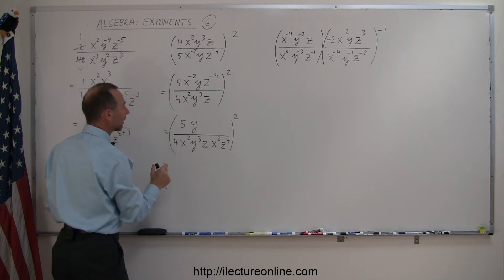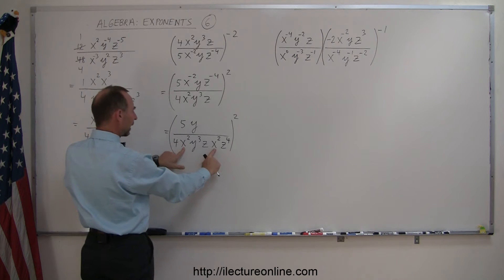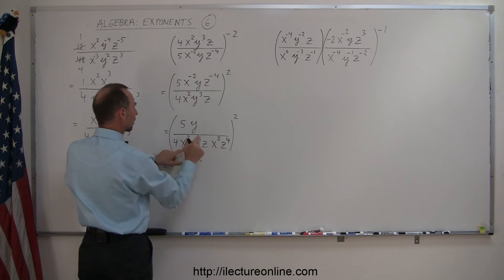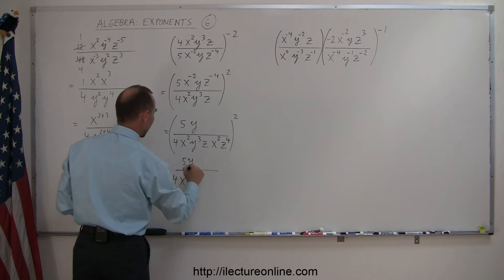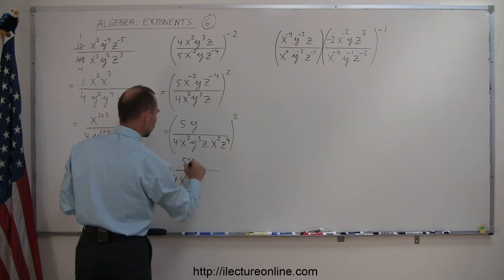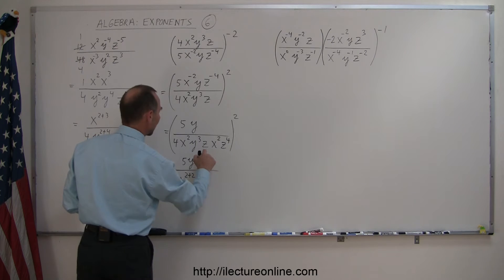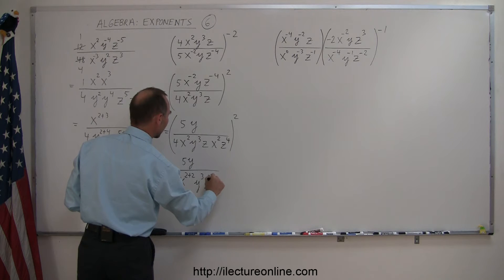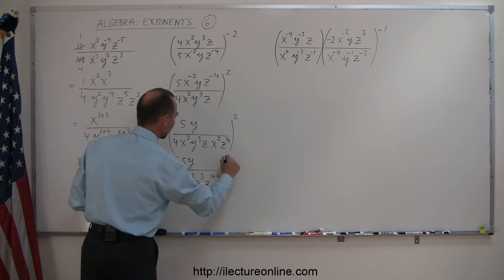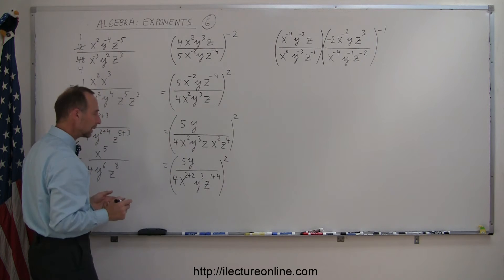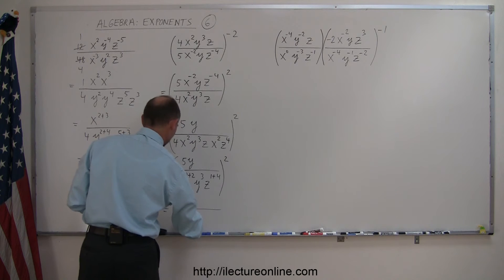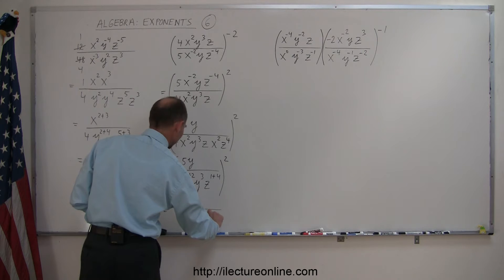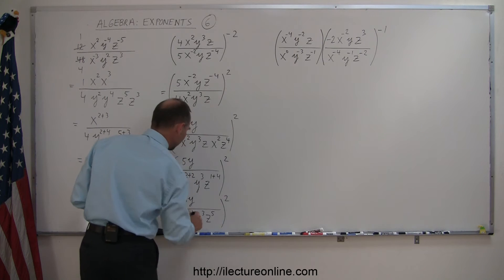I'm going to multiply the same bases and add exponents. So we have 5y in the numerator, divided by 4 times x to the 2 plus 2 power, y³ by itself, and then z here and z there become z to the 1 plus 4 power. The whole thing is still raised to the second power. Adding these together, this equals 5y divided by 4x⁴, y³, and z⁵, with the whole thing raised to the second power.